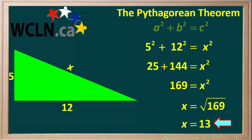So x is equal to 13 units, and the length of the hypotenuse of this triangle is equal to 13 units.